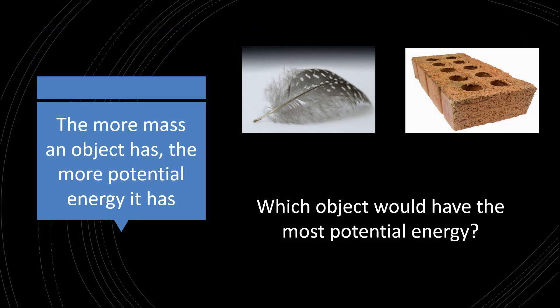The more mass an object has, the more potential energy it has. So we have two objects here — a feather and a brick. Based on this, the brick is going to have the most potential energy because it has a larger mass than the feather.